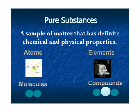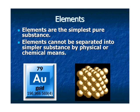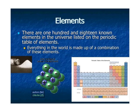We're going to be discussing atoms, molecules, elements, and compounds. Elements are the simplest pure substance. They cannot be separated into simpler substances by physical or chemical means. A gold atom is a gold atom — a piece of gold is made up of a whole bunch of gold atoms. If I break it down, I'm just left with protons, neutrons, and electrons. There are 118 known elements in the universe listed on the periodic table of elements.